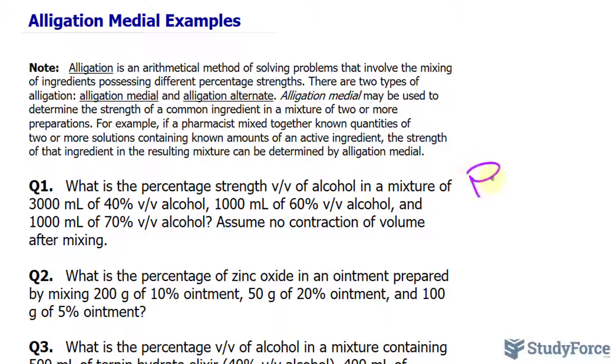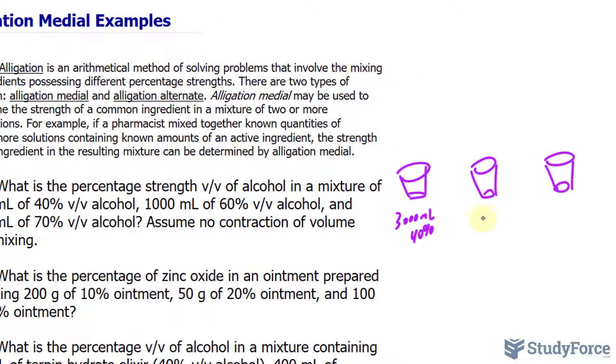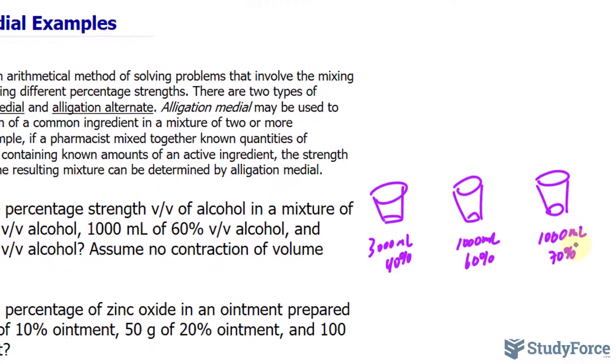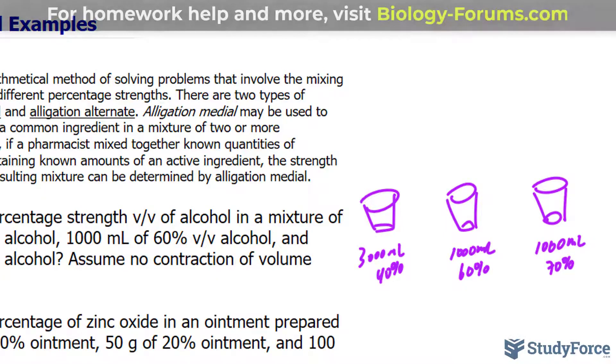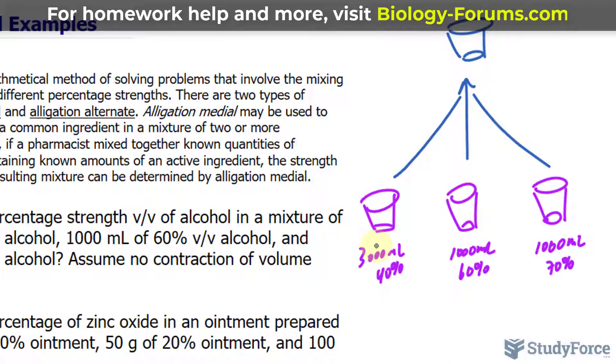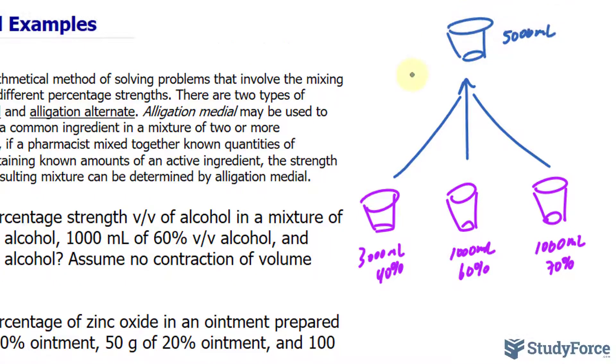So pretend that we have three containers. This is my first container containing 3000 milliliters of 40%, and the other two containers look like this. All three have a different strength of alcohol and we combine them into one container. This one container will have the volume of the sum of these three: 3000 plus 1000 plus 1000 makes 5000 milliliters.